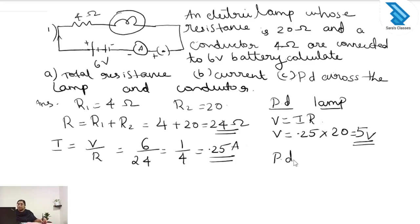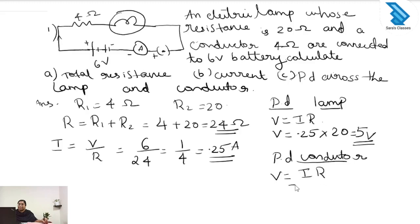Next we have to find the potential difference across the conductor. V is equal to I into R. I is 0.25 and the resistance of the conductor is 4 ohm, so 0.25 into 4 gives 1 volt. The answer is 1 volt.